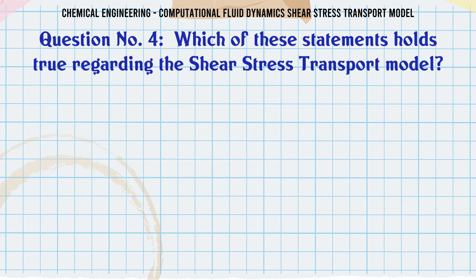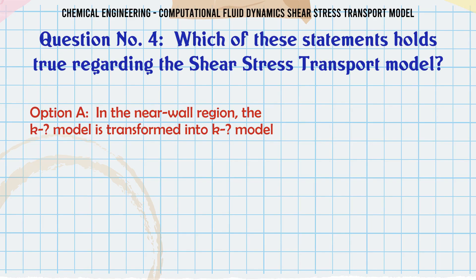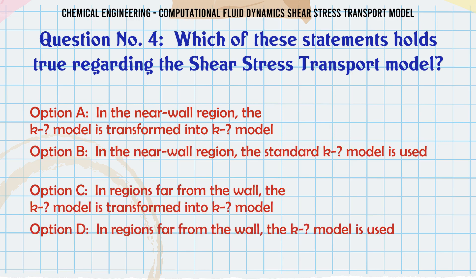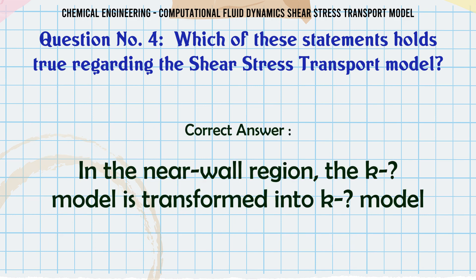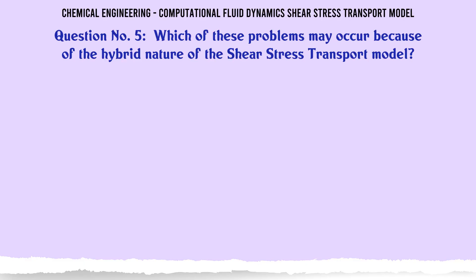Which of these statements holds true regarding the shear stress transport model? A) In the near wall region the K-ω model is transformed into the K-ε model. B) In the near wall region the standard K-ε model is used. C) In regions far from the wall the K-ε model is transformed into K-ω model. D) In regions far from the wall the K-ω model is used. The correct answer is: in the near wall region the K-ω model is transformed into the K-ε model.